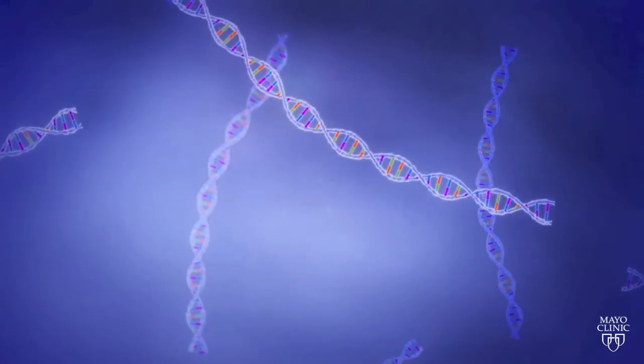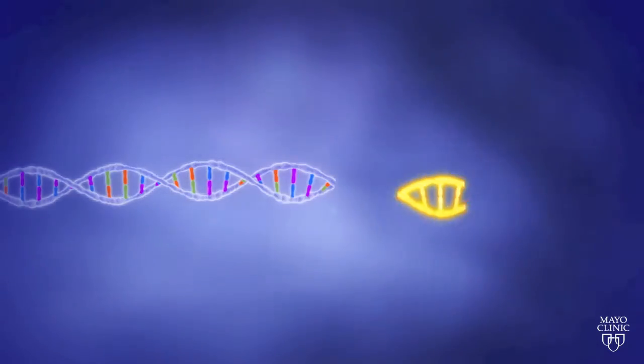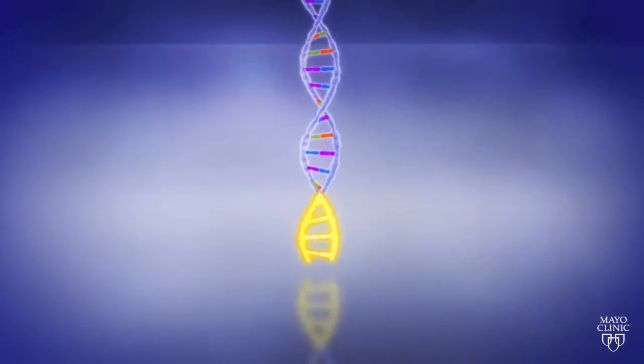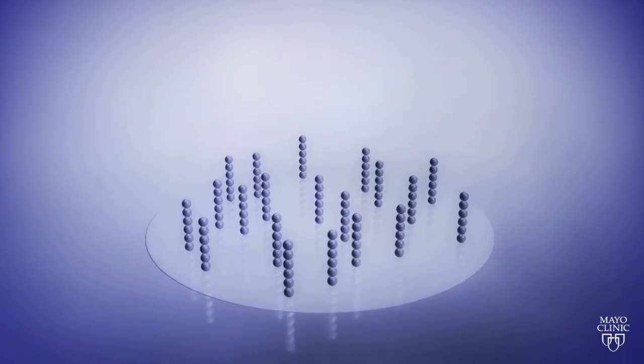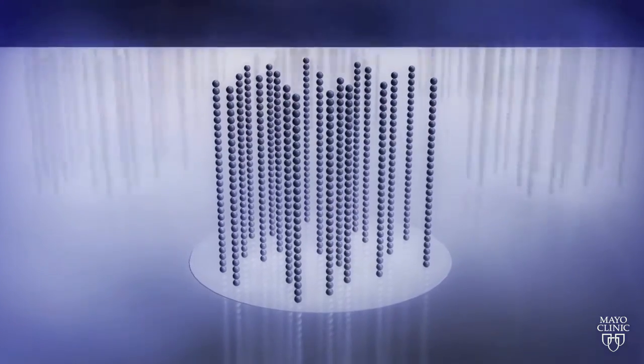Special tags are then added to the ends of the fragmented DNA. The tagged DNA is put on a glass slide and the sequencer reads the DNA one base at a time using different colored tags.